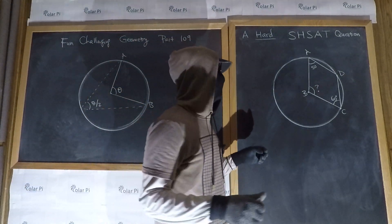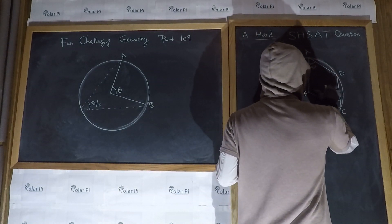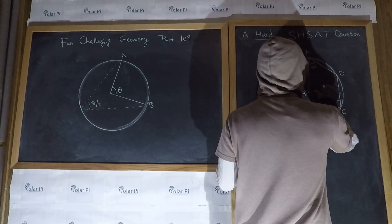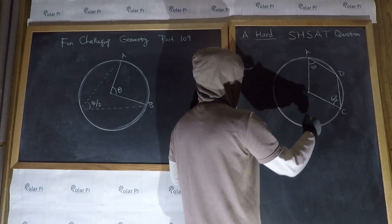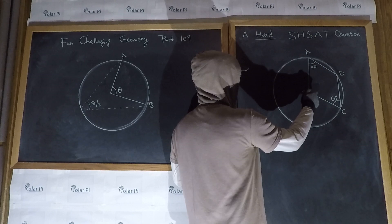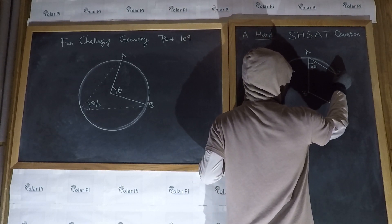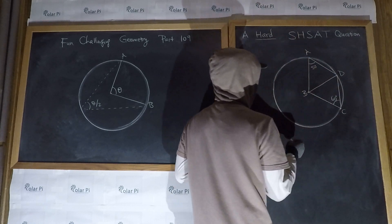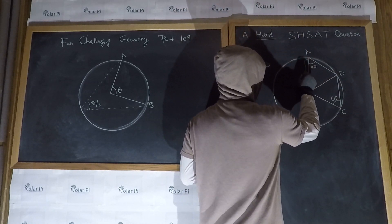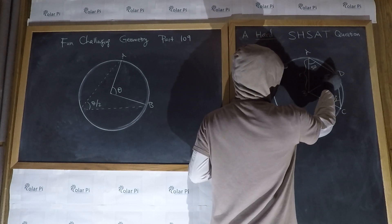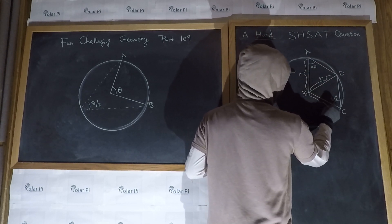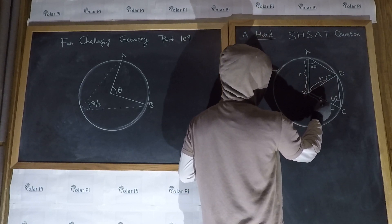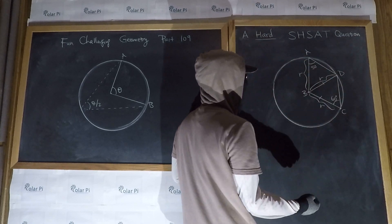Have you figured it out? Well, another demonstration of the power of drawing lines that are not originally given in the visual. We're trying to find this angle right here. So, draw this line here. If you draw that line there, notice that this here is R, but so is this — it's R — and so is this. Meaning, because this side is equal to this side, this here is an isosceles triangle.